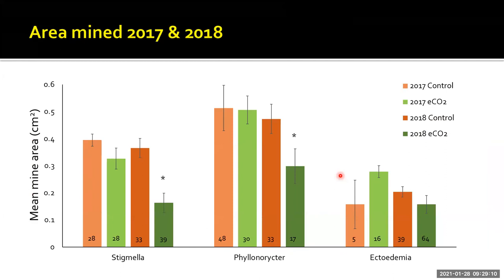This shows highlights from the dataset over the first two years of fumigation. For oak leaves, you can see the different genera of leaf miners across the bottom — Stigmella, Phyllonorycter, Ectoedemia. In 2017, there was no real change in levels of herbivory between control arrays and elevated CO2. But then for two of the identified species, there was a significant decrease in herbivory within the elevated CO2. For hazel data, a similar pattern emerged but results weren't quite significant. As we progress collecting data across the years we'll know whether these patterns continue, but there's already a significant impact on herbivory.